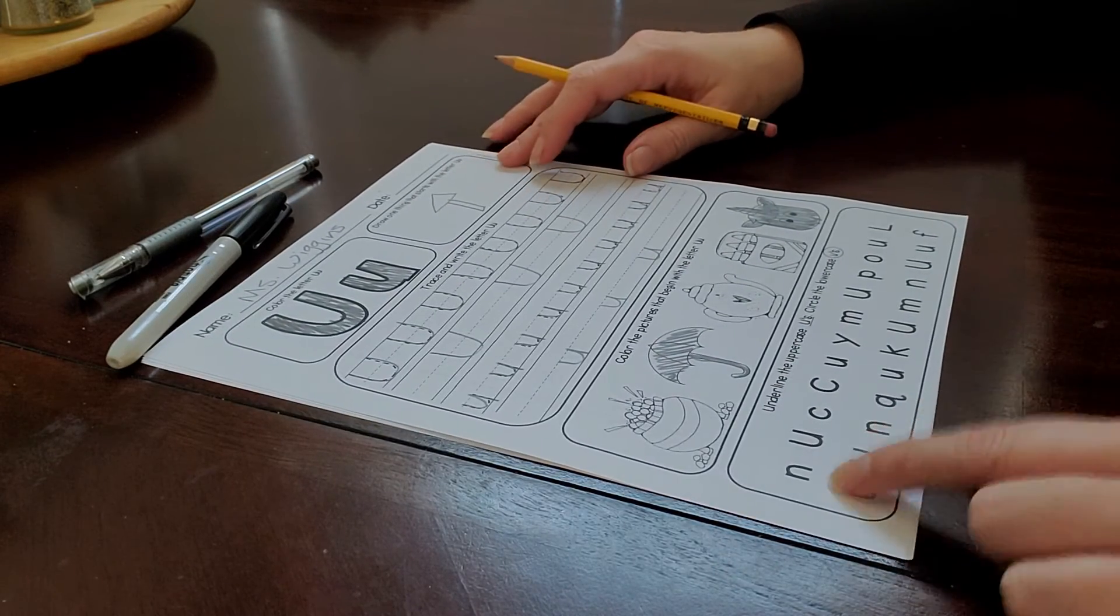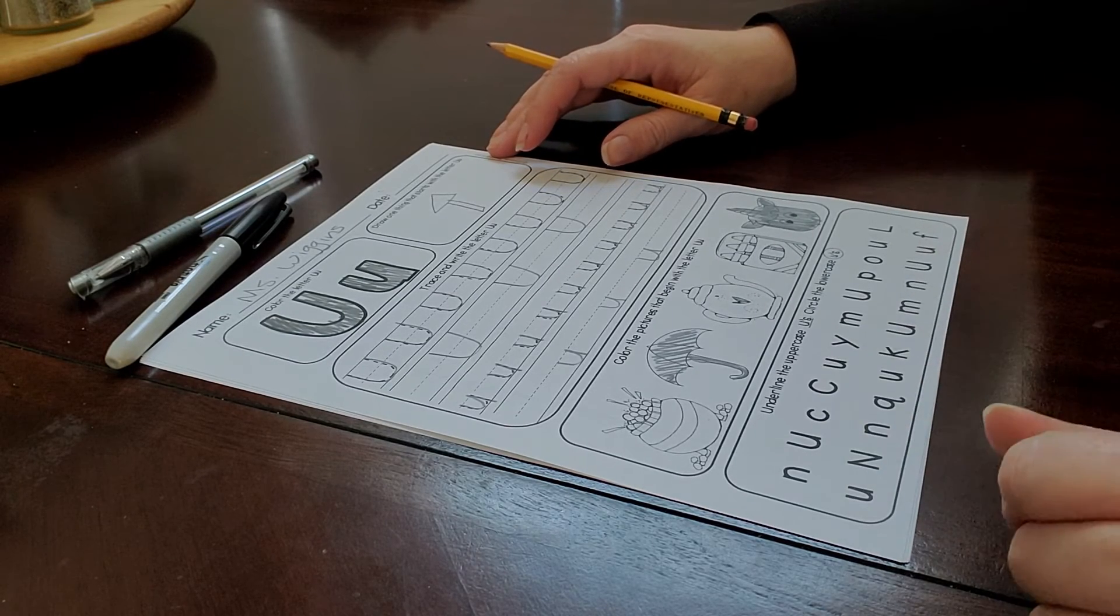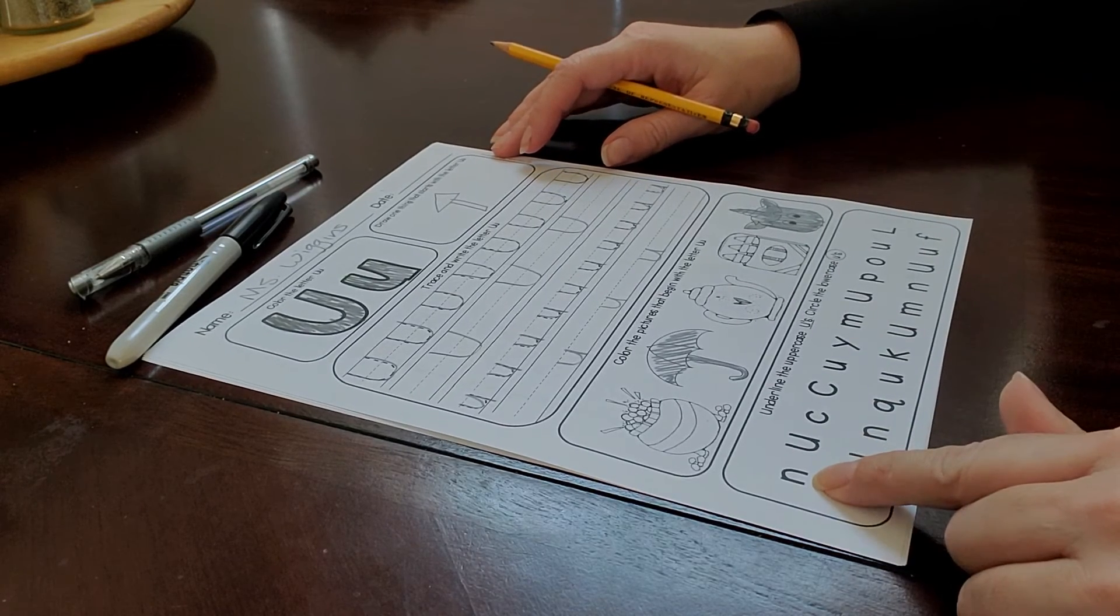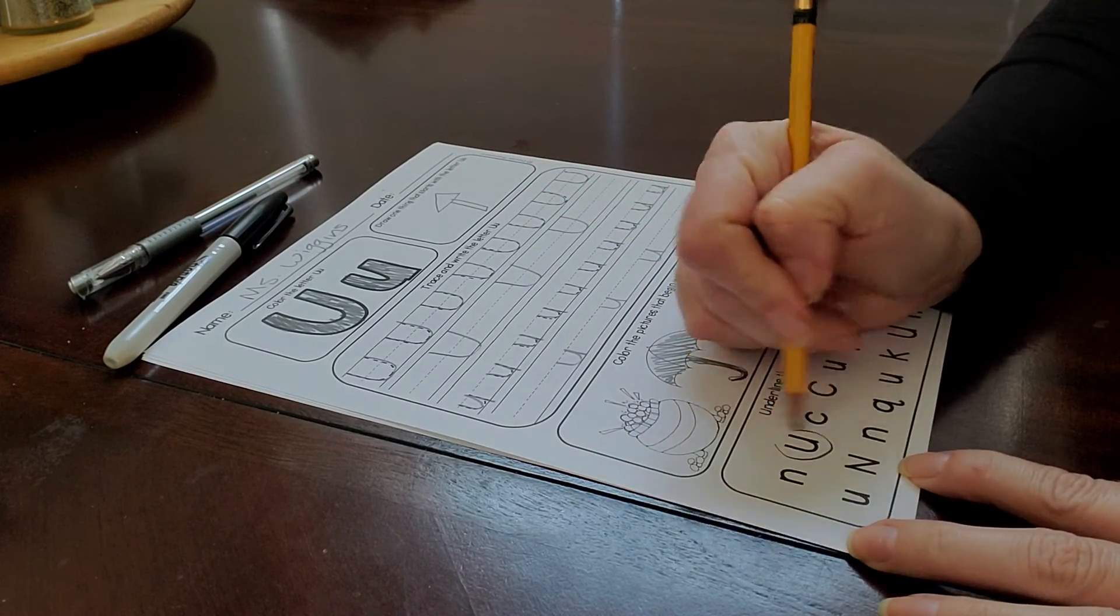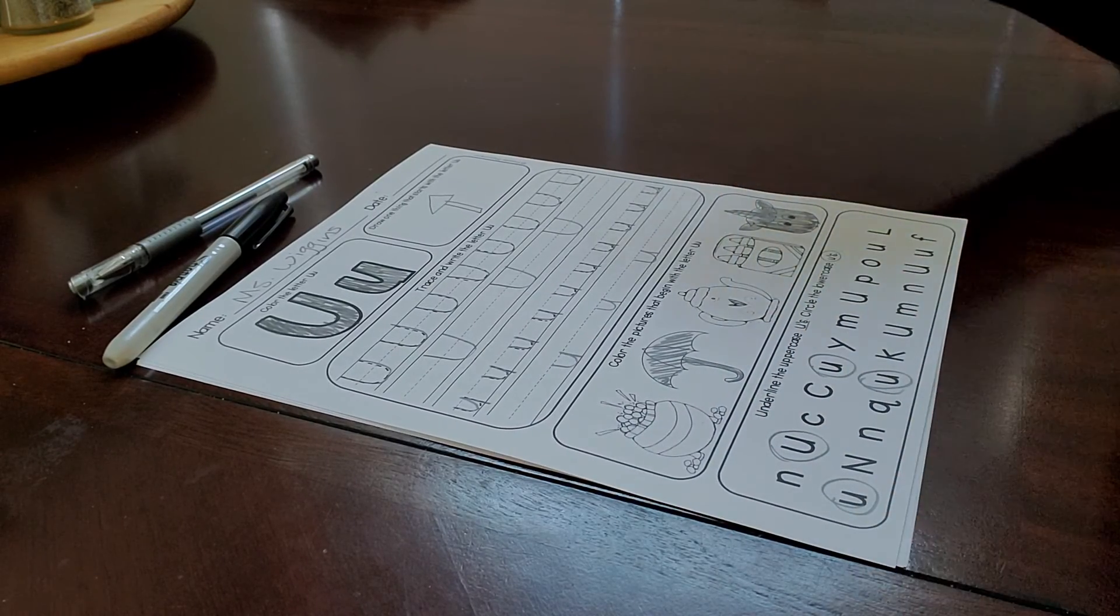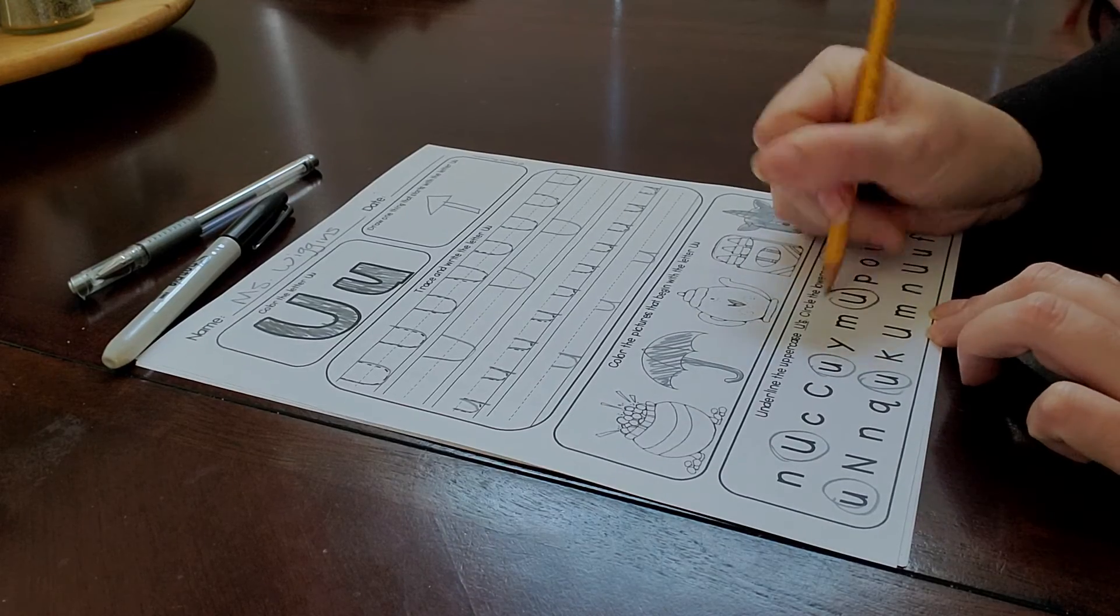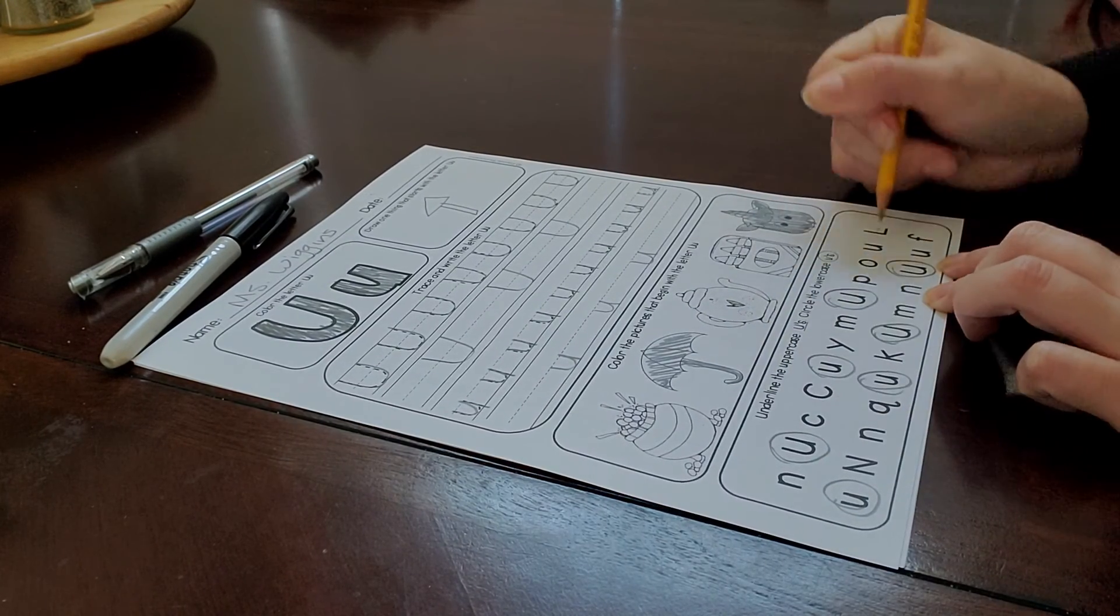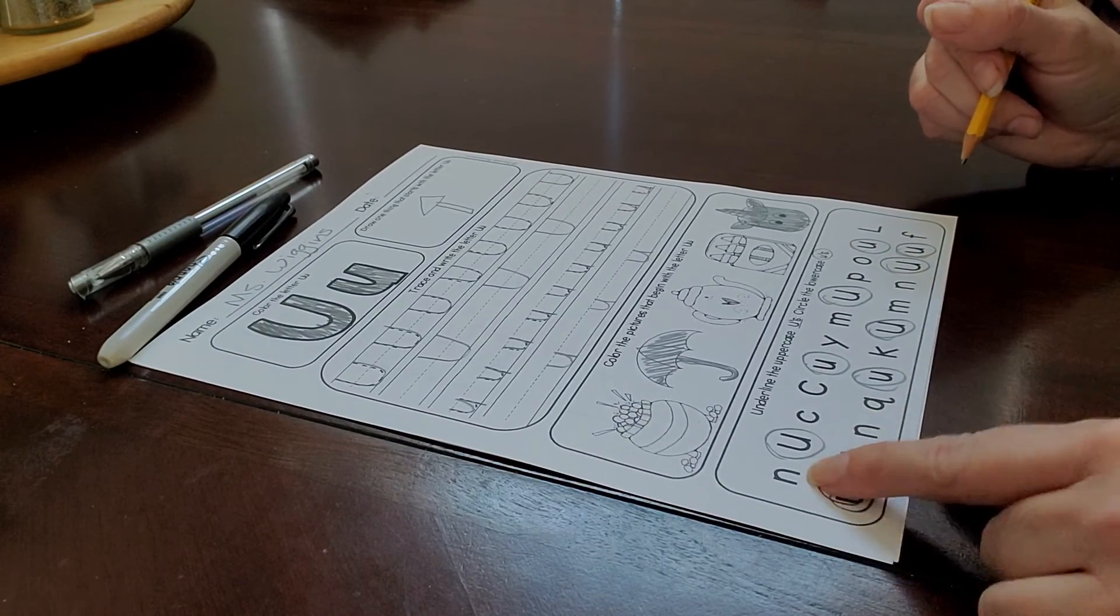Alright. And then you're just going to circle your lowercase and uppercase U's. Do not get tricked by N's. We want the upside down ones. So circle the upside down U's. We want the U's which are upside down N's. So make sure to circle those. Do not let the N's trick you.